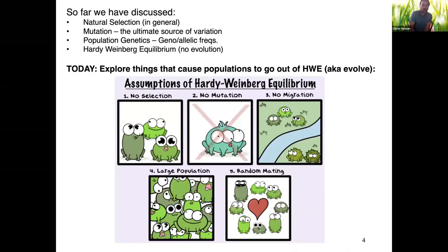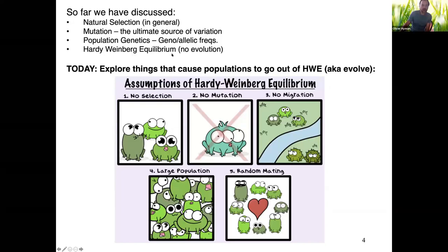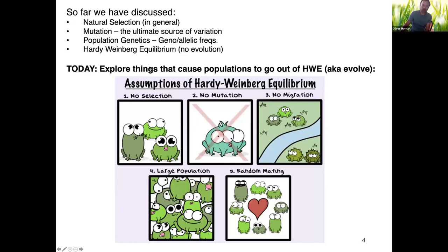So far up to this point, we've discussed natural selection. We've talked about mutation being the ultimate source of new variation in populations. We've talked about population genetics and calculating genotypic and allelic frequencies. We've also talked about Hardy-Weinberg equilibrium and what a population looks like when there's no evolution. So today we're going to explore things that cause a population to evolve or go out of Hardy-Weinberg equilibrium.